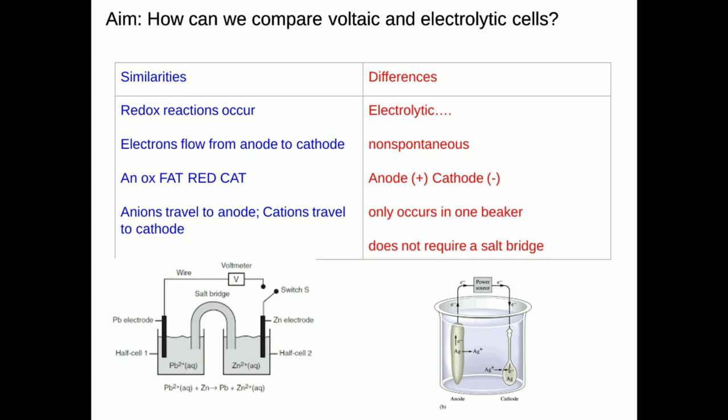The similarities are that redox reactions occur. Electrons always flow from anode to cathode. The mnemonic device AN-OX and FAT-RED-CAT are always true. Anions always travel to the anode, and cations always travel to the cathode in the solutions that surround the electrodes. Now, let's describe the differences that exist in electrolytic cells.